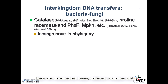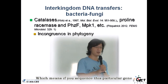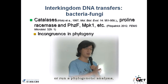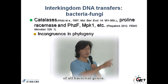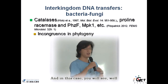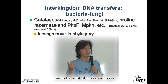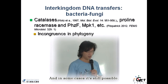There are documented cases of different enzymes, and basically the evidence is from incongruence in phylogeny, which means that if you sequence a particular gene from fungi and run the phylogenetic analysis, you will find that it's embedded within the clade of all the bacterial genes. In this case, you will see this must have been transferred from bacteria, or there has to be massive losses for that particular gene in fungi.